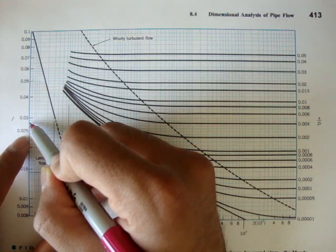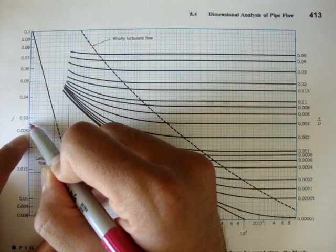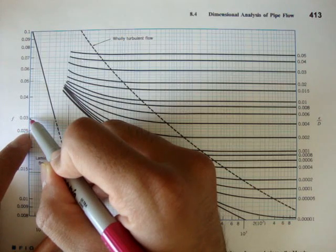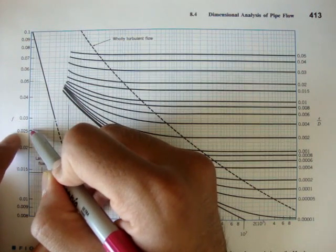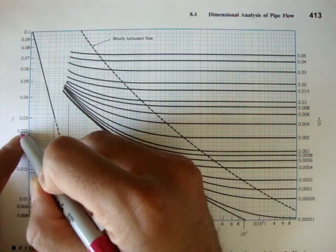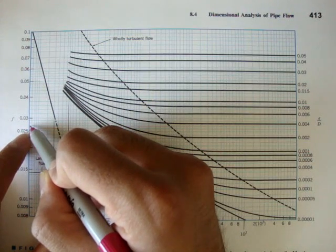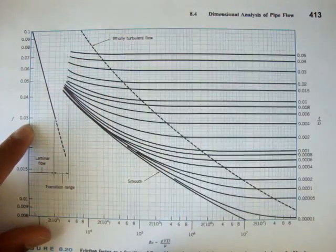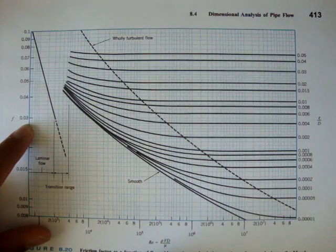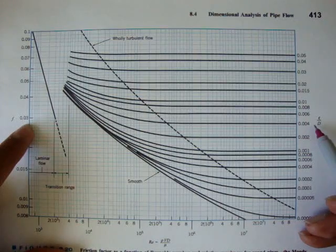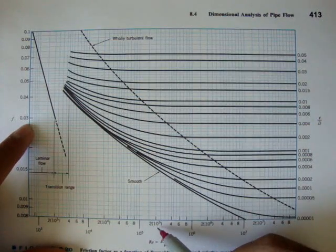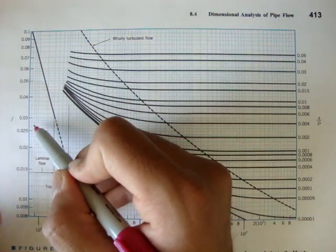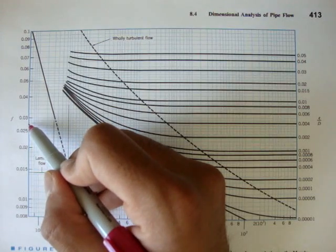I don't know what that number is. Well, maybe we can figure it out. If this is 0.025 and there's 1, 2, 3, 4, 5, it goes by increments of 0.001. So, 0.025, 0.026, 0.027, 0.028. So, using, let me write that down, 0.028. Okay, so if we found out that our roughness coefficient was 0.004 and we found out that our Reynolds number was 2 times 10 to the 5th, we can see the intersection. Here, the frictional factor would be about 0.028.